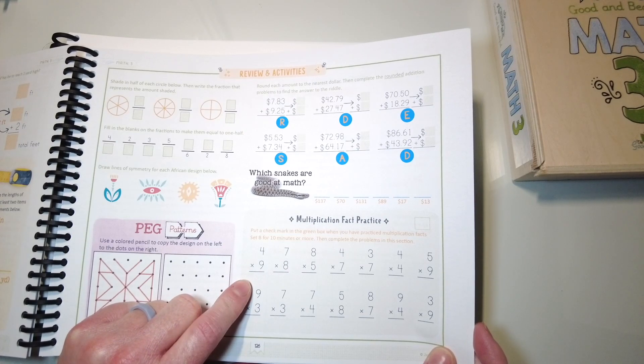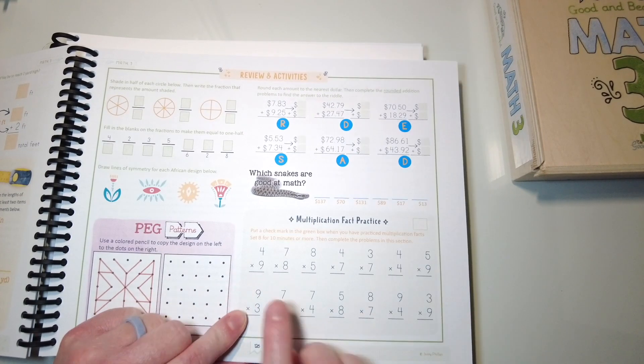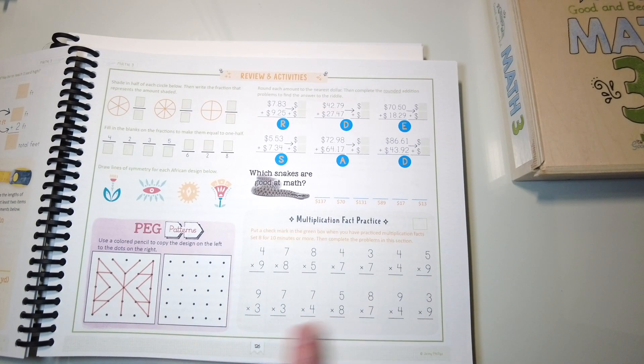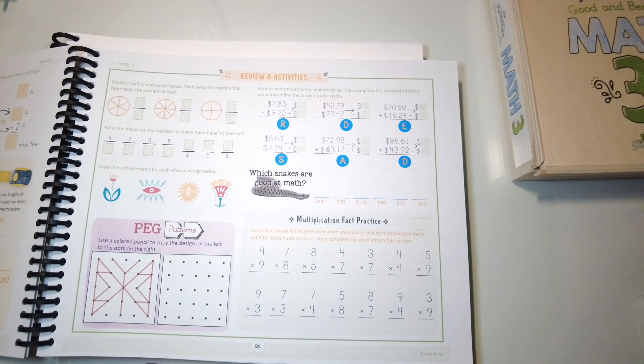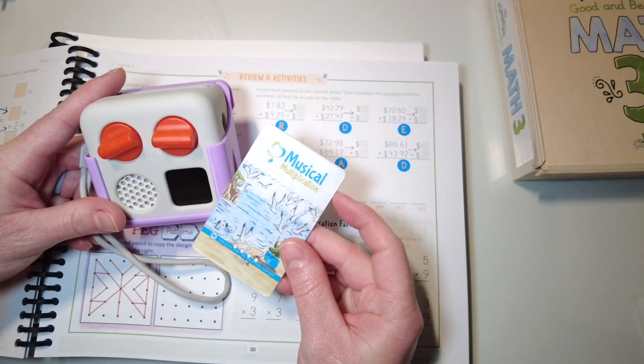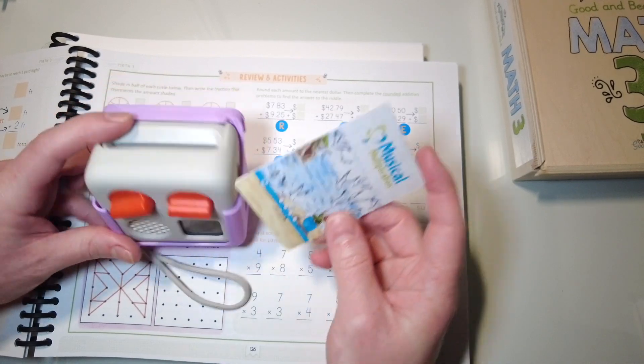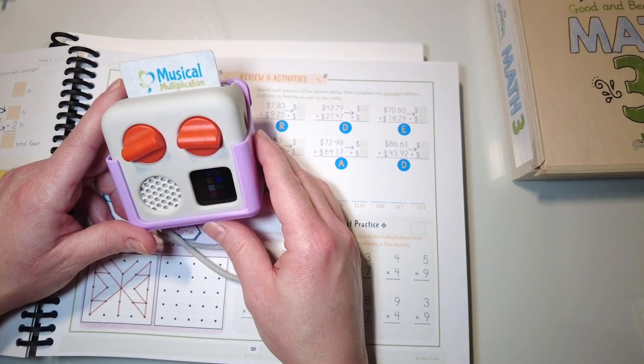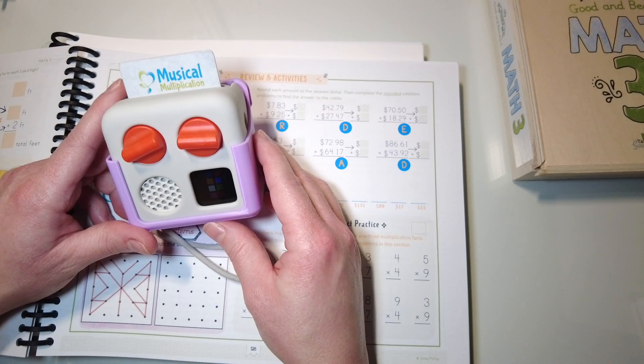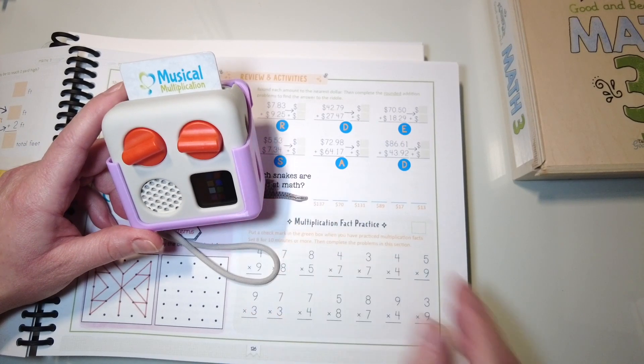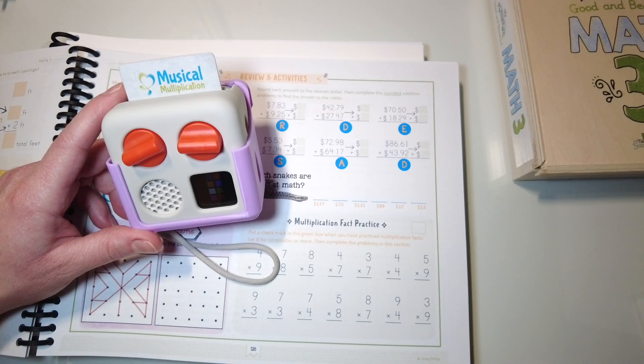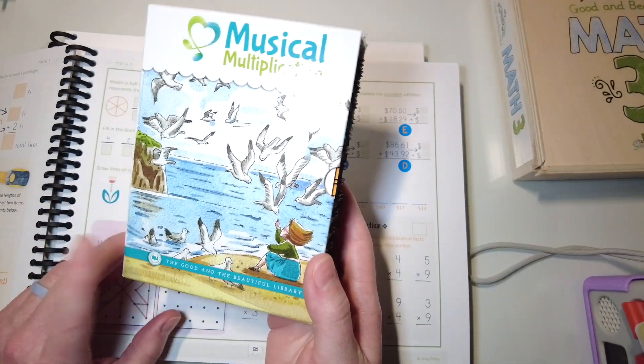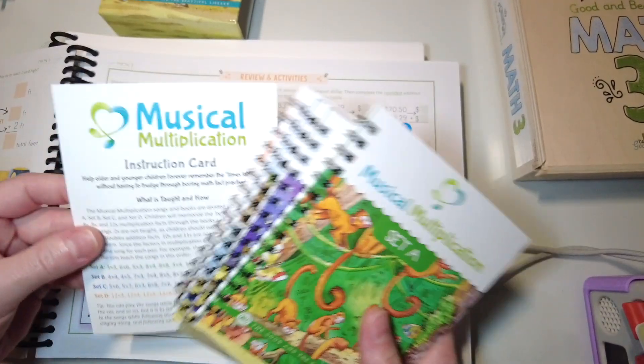You can see here where they will practice the multiplication facts, and she'll get a check here once she completes her review, and then also complete the multiplication here. What we use for that is her Yoto, and I made a musical multiplication card, so all she has to do, five times six, is put that in. Five times six is thirty, birds fly over the sea.